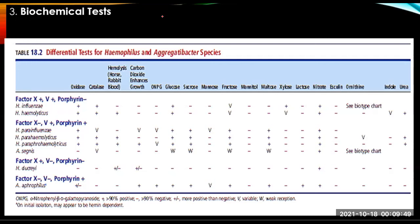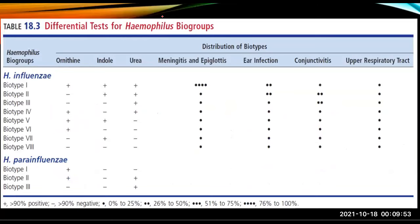Biochemical tests such as carbohydrate fermentation, indole, urease, and ornithine decarboxylase tests are used to further differentiate and biotype Haemophilus species. Please take note of the differences and similarities in the differential tests for the Haemophilus biogroups.